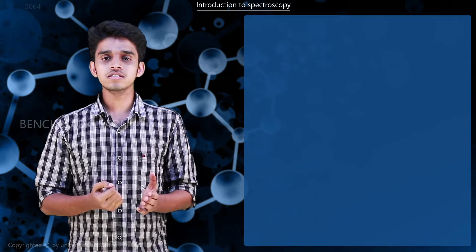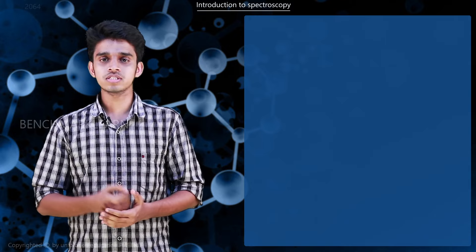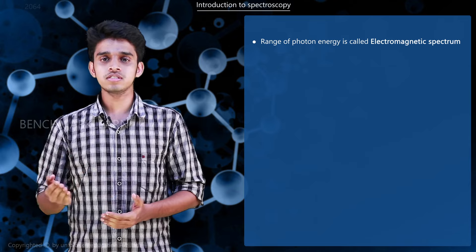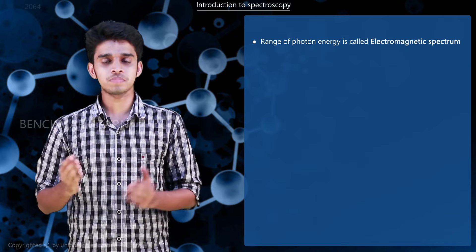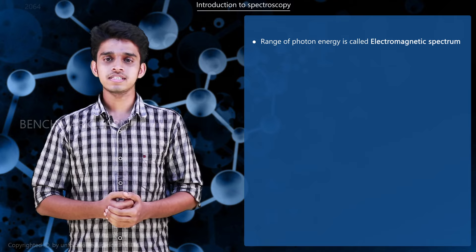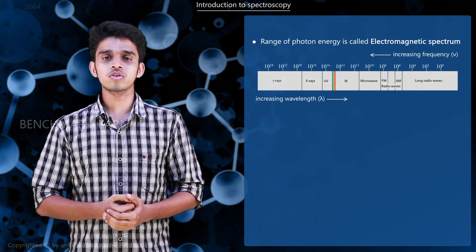Light consists of photons of different frequencies and thus different energies. This range of photon energies is called the electromagnetic spectrum. An EM spectrum can be arranged in increasing or decreasing order of frequencies.